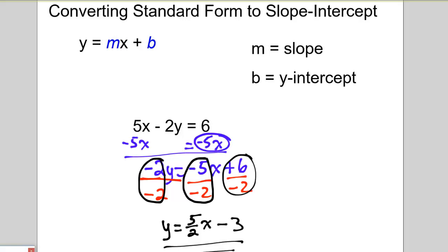And remember, the coefficient of x, which is this one right here, is the slope. So the slope of this line is 5 halves. And the b value, which is this number here, is the y-intercept.